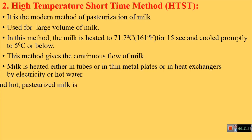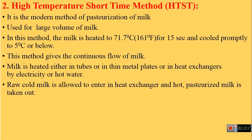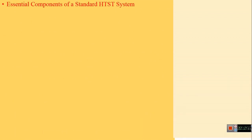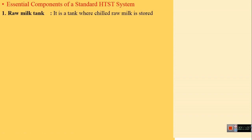In the HTST system, raw cold milk enters the heat exchangers and hot pasteurized milk is taken out. It is a comparatively safer method of pasteurization. Different designs of pasteurization systems have been developed for HTST, but all contain some basic essential components. The first essential component is the raw milk tank — where chilled raw milk is stored at about 4°C.